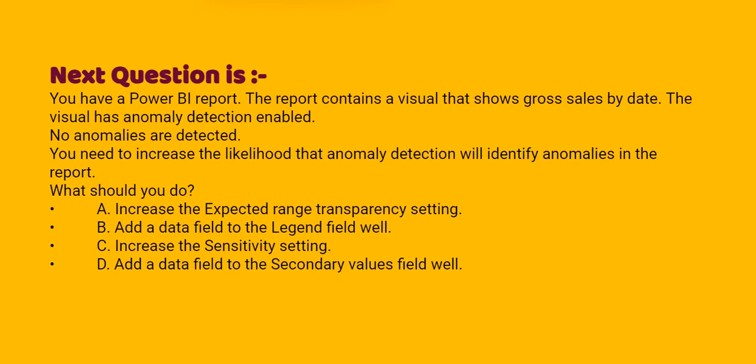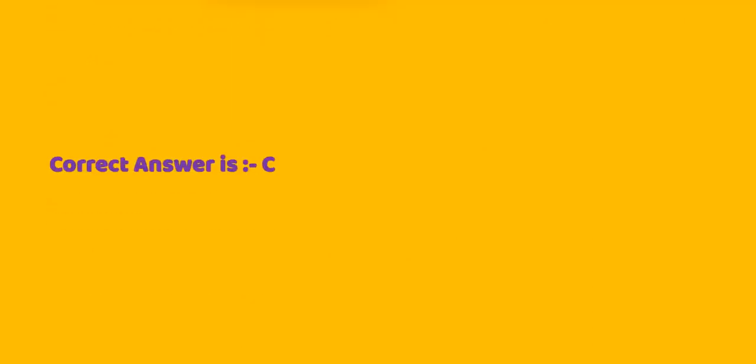Next, you have a Power BI report. The report contains a visual that shows gross sales by date. The visual has anomaly detection enabled. You need to increase the likelihood that anomaly detection will identify anomalies in the report. What should you do? Option A: increase the expected range transparency settings. Option B: add the data field to the legend field well. Option C: increase the sensitivity settings. Option D: add the data field to the secondary values field well. The correct answer is Option C.